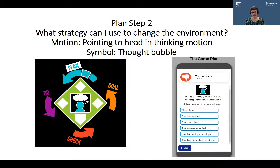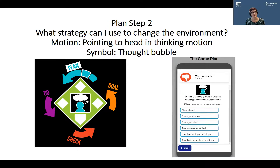The next step of the Game Plan is Plan Step Two. We ask the question, 'What strategy can I use to change the environment?' There are six strategies someone can use to change the environment: plan ahead, change spaces, change the rules, ask someone for help, use technology or things, and teach others about my abilities and needs.